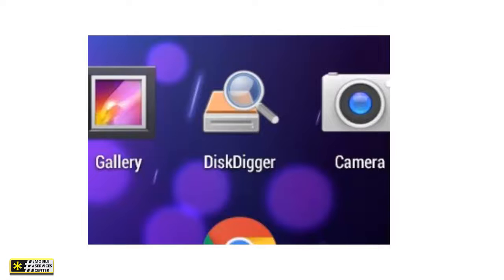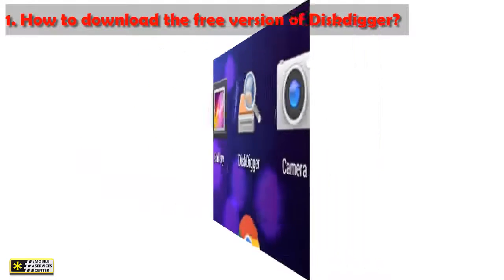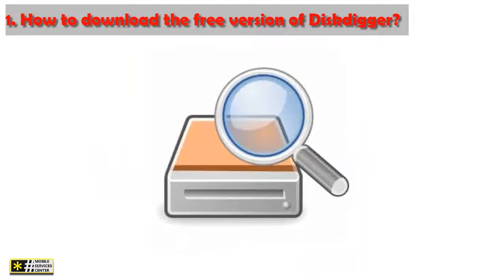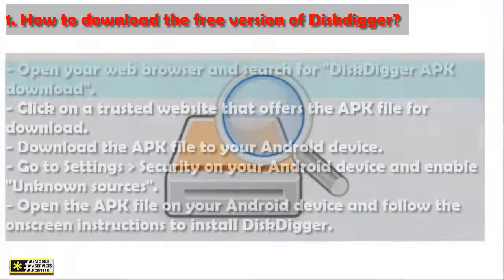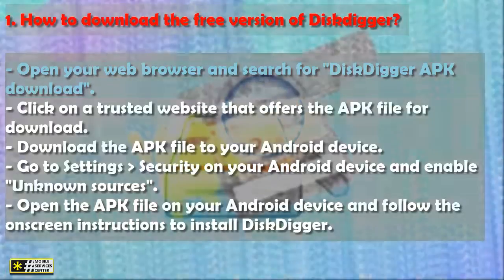Number one: how to download the free version of DiskDigger. The free version of DiskDigger can be downloaded from the Google Play Store. However, if you want to download the APK file directly, you can follow these steps: open your web browser and search for "DiskDigger APK download", then click on a trusted website that offers the APK file for download.